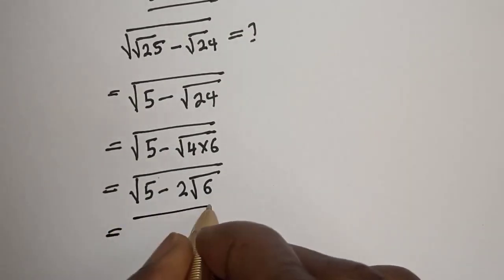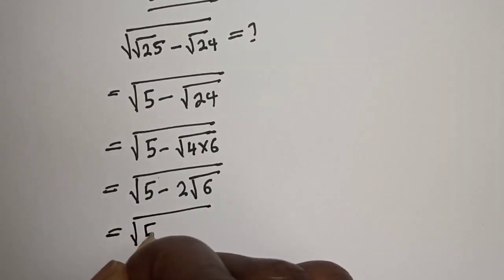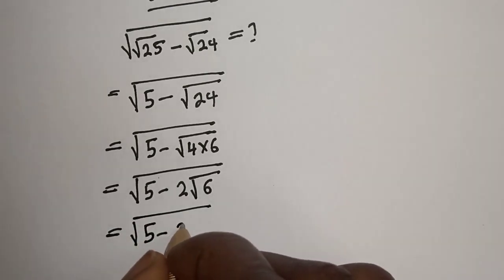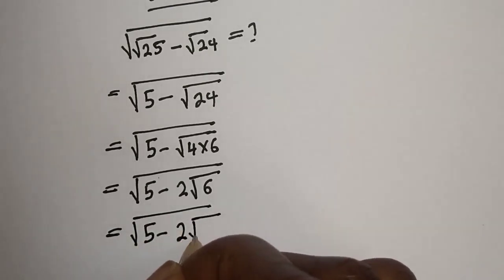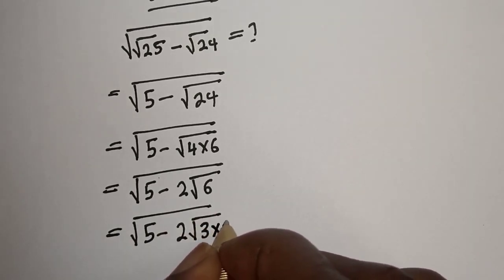Equal to square root of 5 minus 2 square root of 3 multiplied by 2.